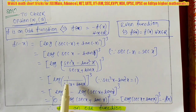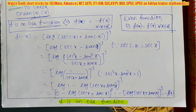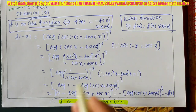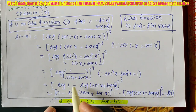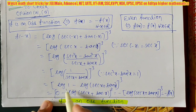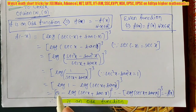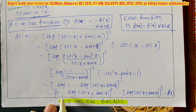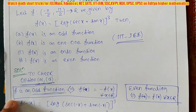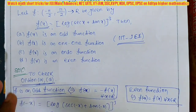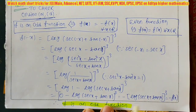Now use the logarithm property. Since it is a division, we subtract when separating: log 1 - log(sec x + tan x)³. Since log 1 = 0, we have 0 - log(sec x + tan x)³. That is -log(sec x + tan x)³, and since log(sec x + tan x)³ is f(x), we get f(-x) = -f(x). So f is an odd function.